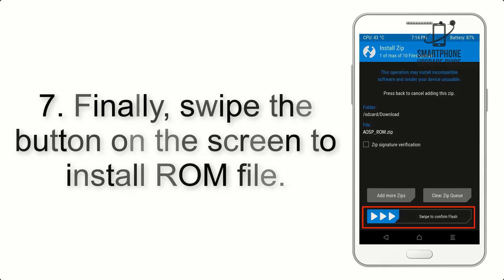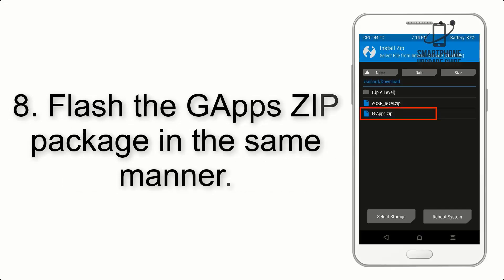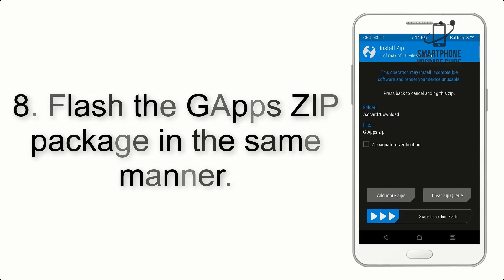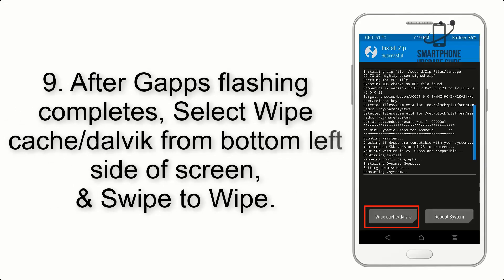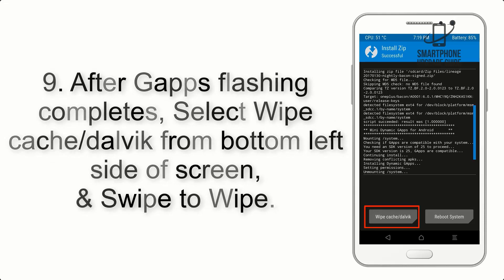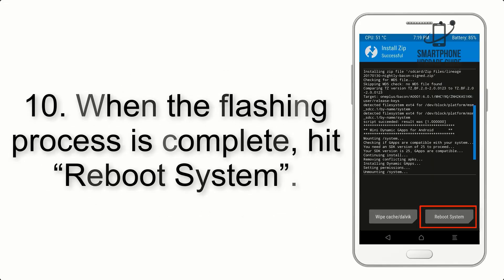Step 7: Swipe the button on the screen to install the ROM file. Step 8: Flash the GApps zip package in the same manner. Step 9: After GApps flashing completes, select Wipe Cache and Dalvik from the bottom left side of the screen and swipe to wipe.